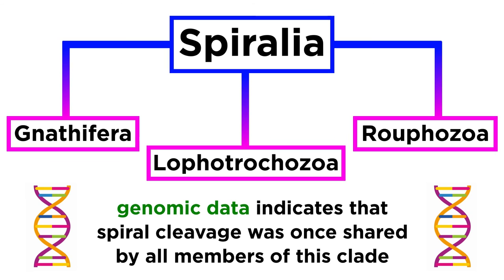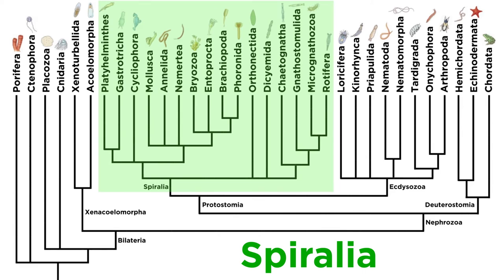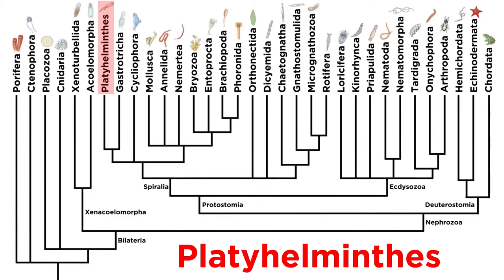So, as we can see, Spiralia includes a huge range of animals, so we will need many tutorials to get through this clade, one phylum at a time. We will begin with phylum Platyhelminthes, so let's move forward and get an introduction to these parasitic and free-living flatworms.